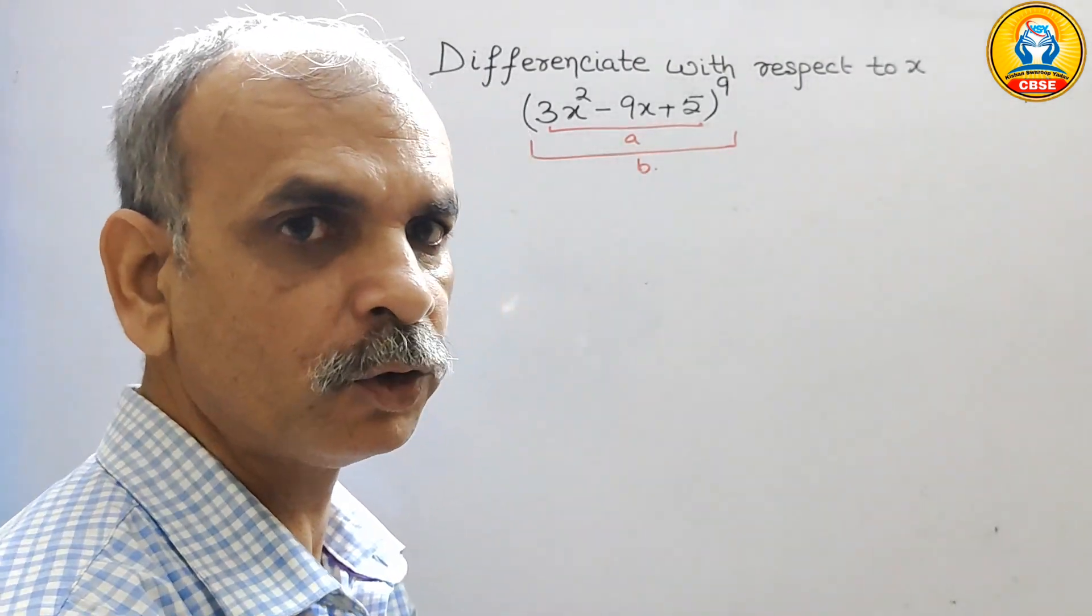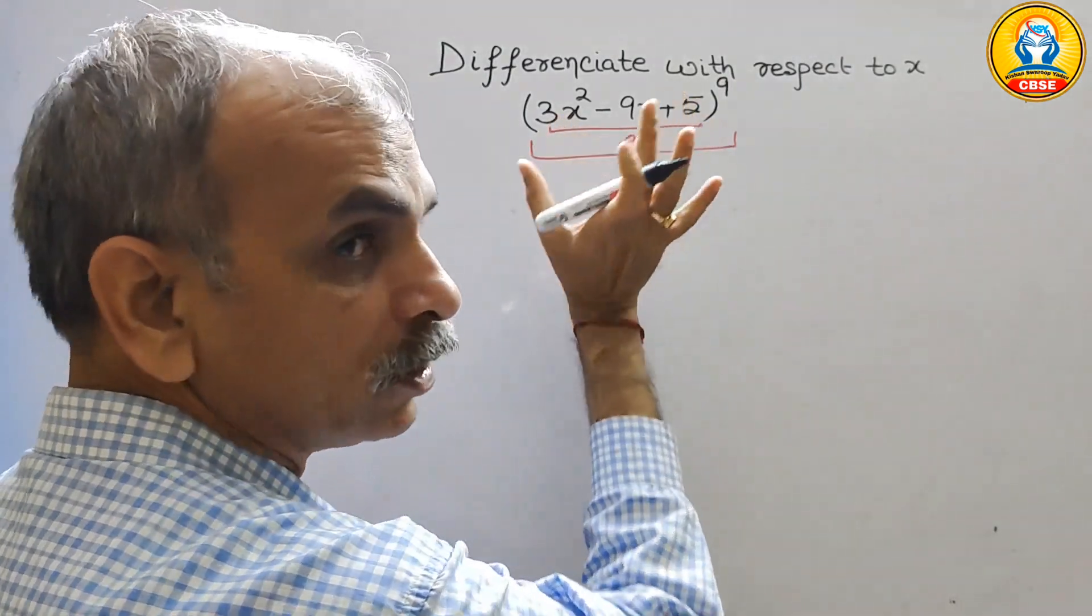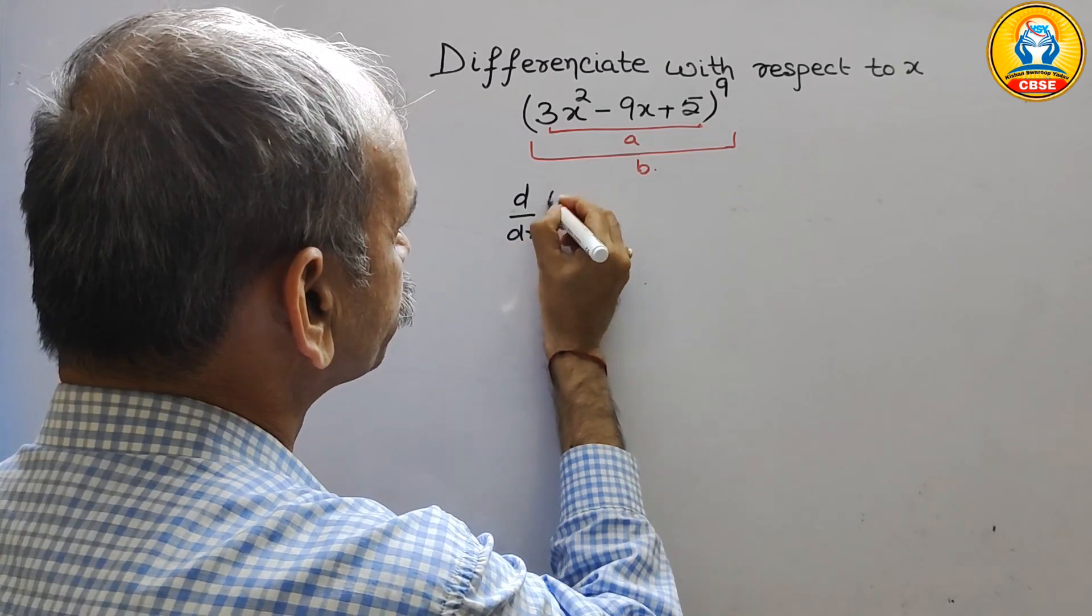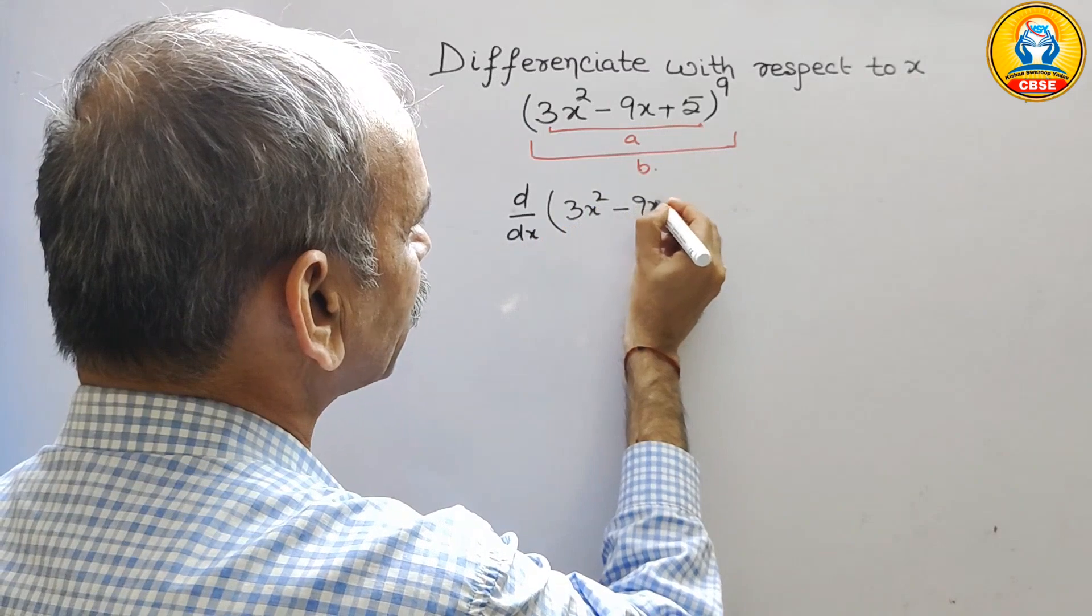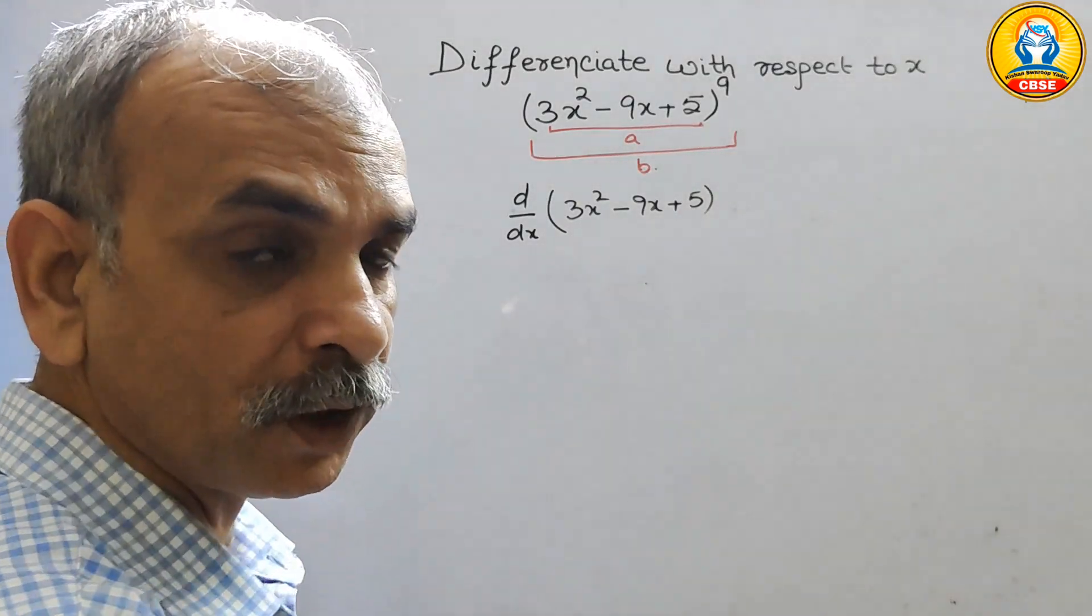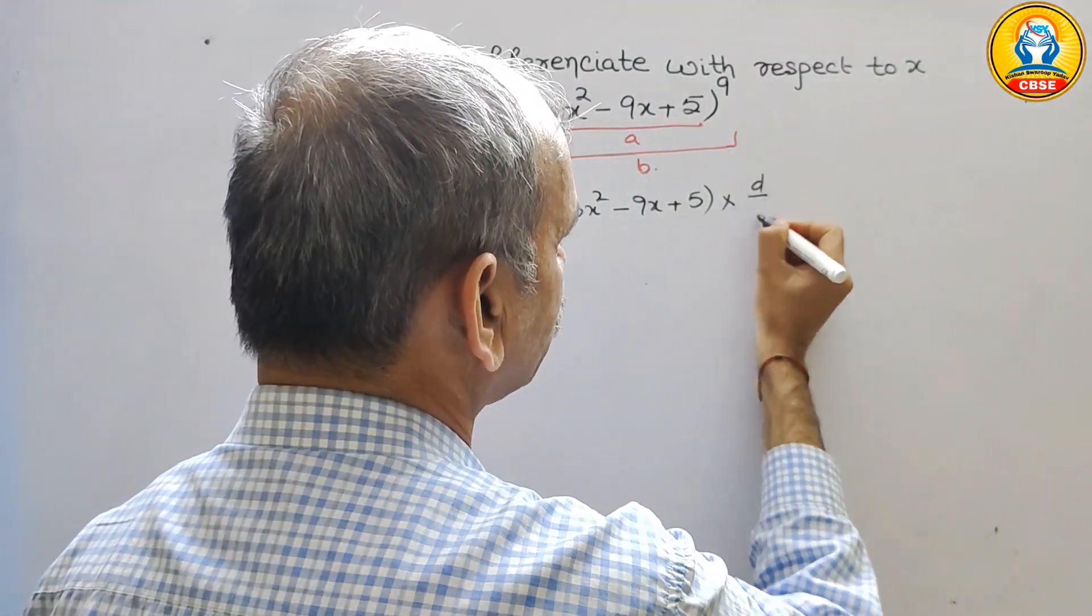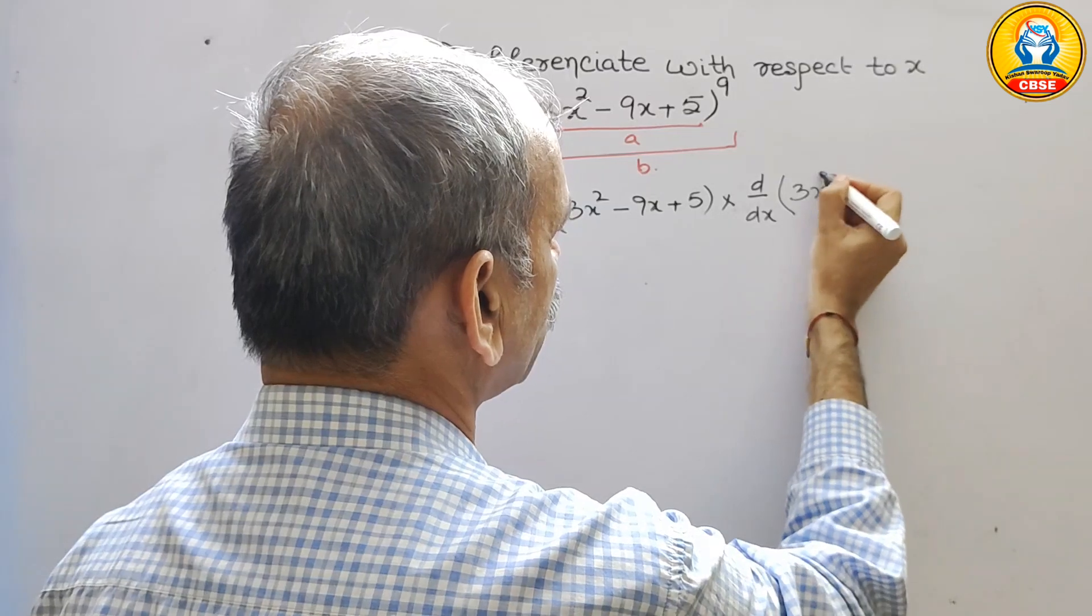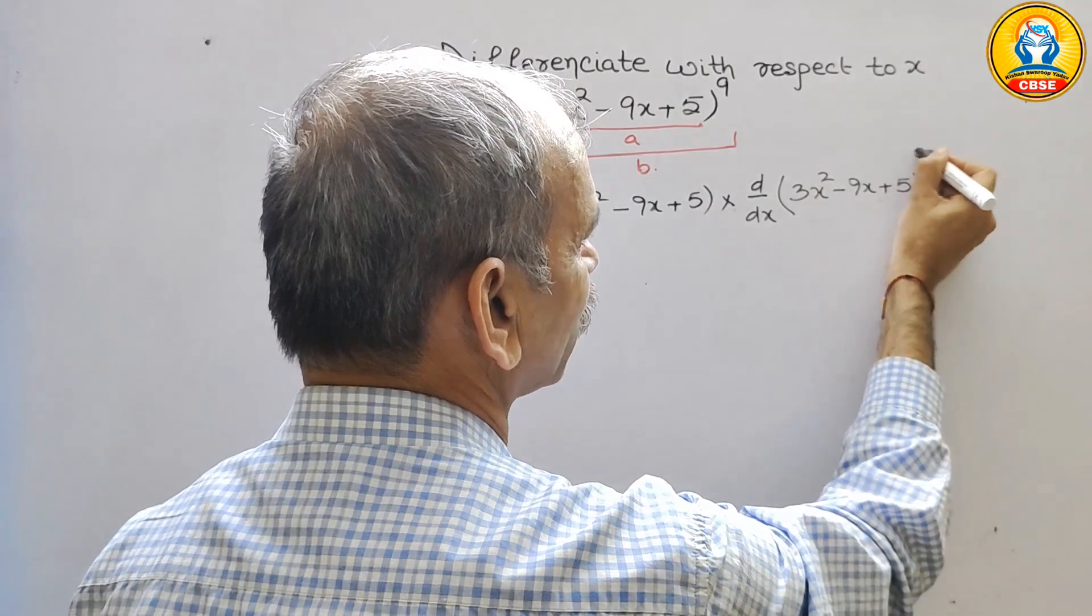So here what we will do. Just we will go for first, we have to do this. That means d by dx of 3x square minus 9x plus 5. This is one part, into next is your d by dx of 3x square minus 9x plus 5 to the power of 9.